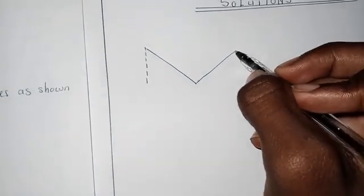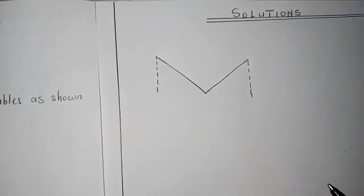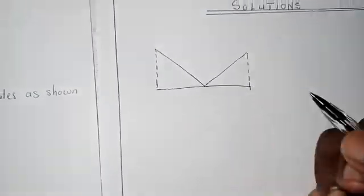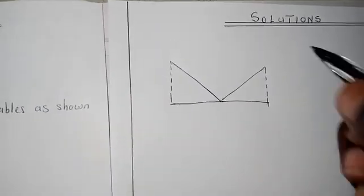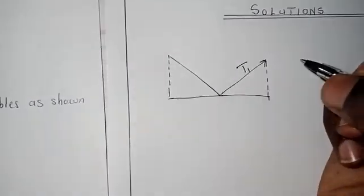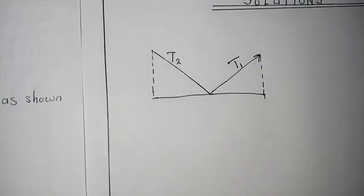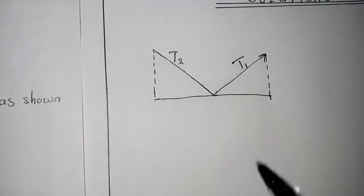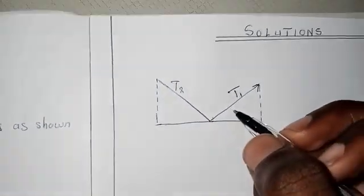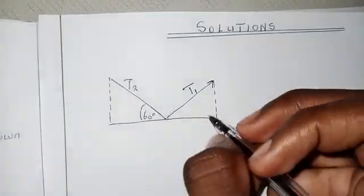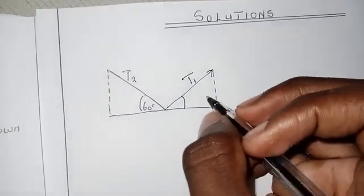Draw the diagram with a line, bringing this line here and connecting the other side. We draw something which is going to look like this. Then we can connect this line on each side. We acknowledge that this is tension one and this is tension two. Tension is simply a force in a rope or in a string. Using the laws of angles that add up to 180 degrees, we discover that this angle is 60 degrees and this one is 30 degrees.